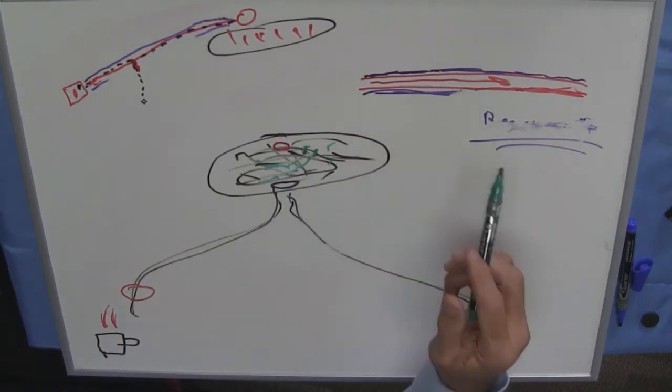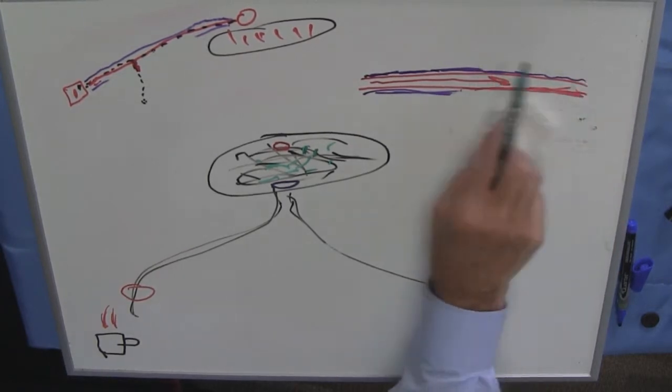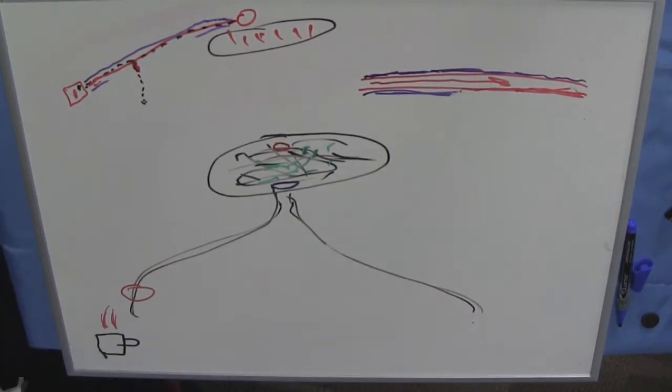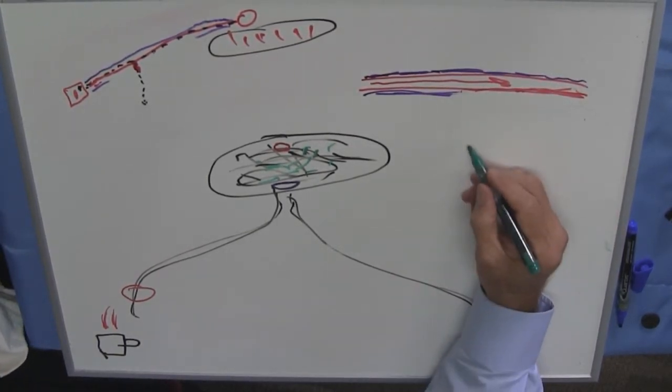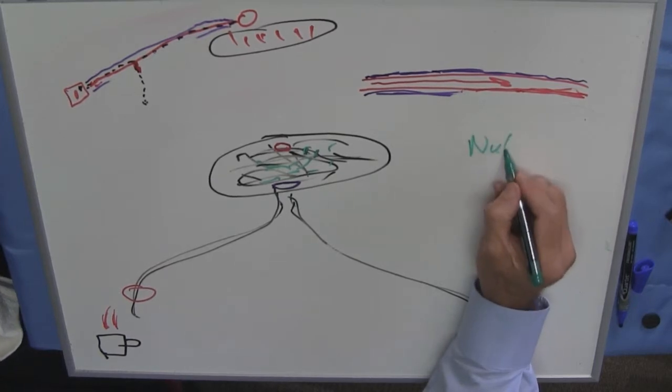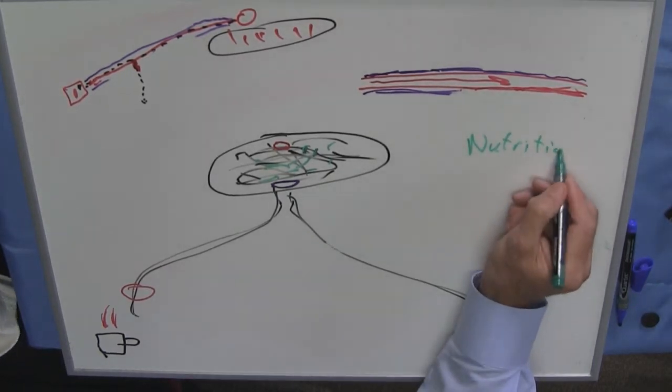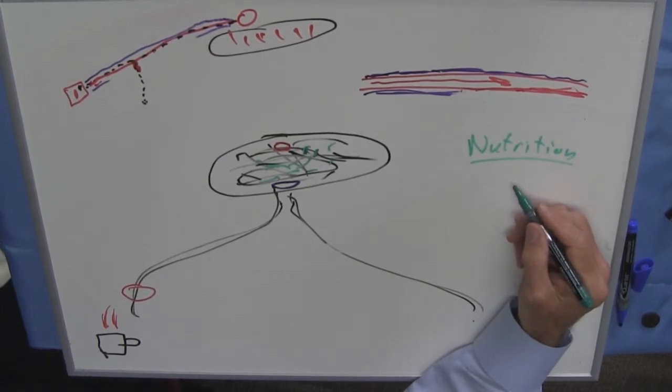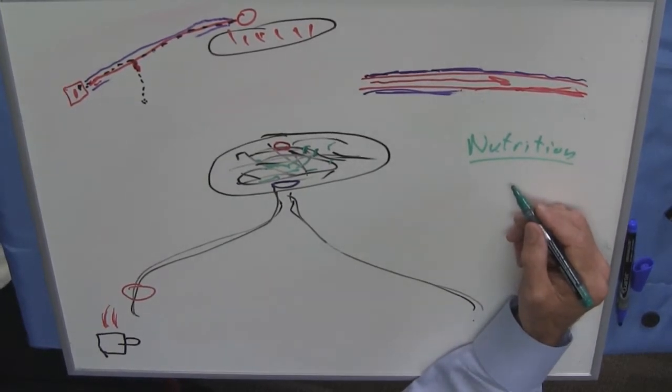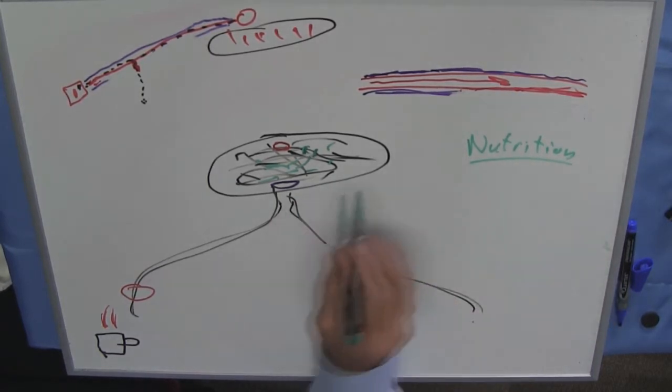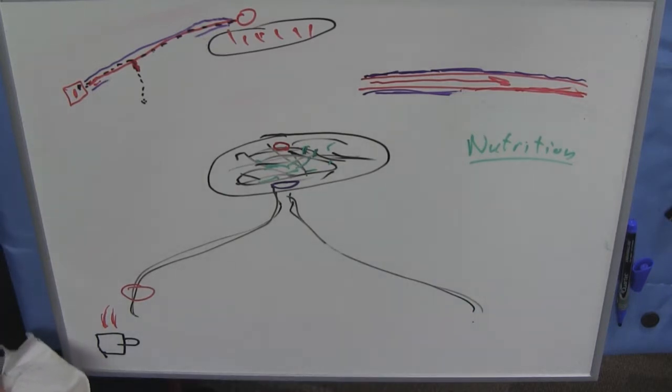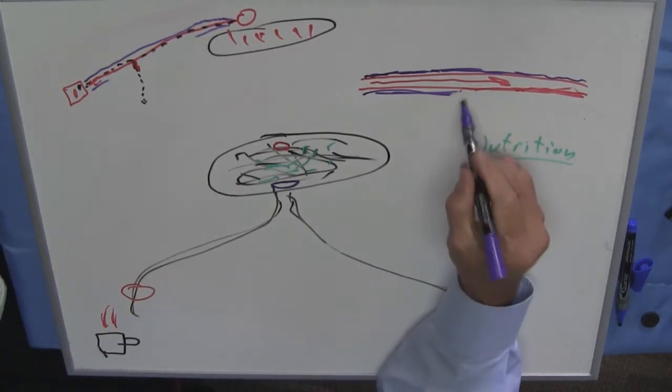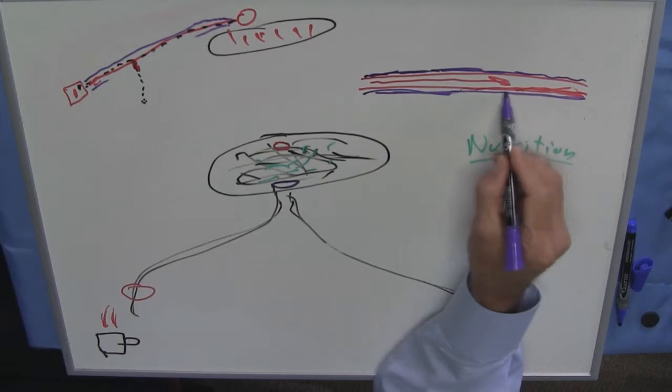When you look at what Dr. Wahls discusses, she's very big on the use of nutrition. She gets into ways that you can consume food and use less energy, so that that food can be used to repair the myelin that has been destroyed.